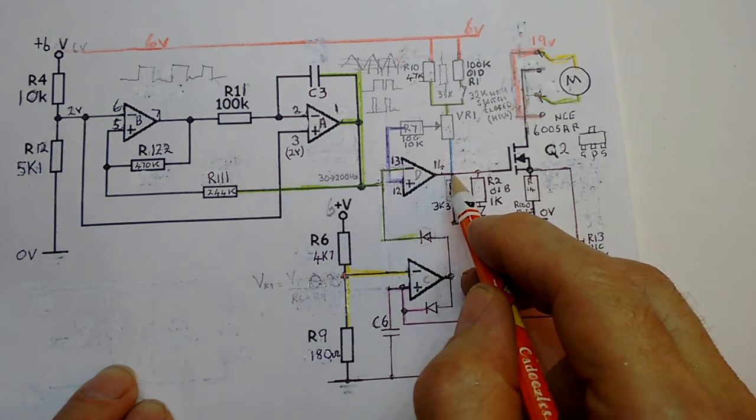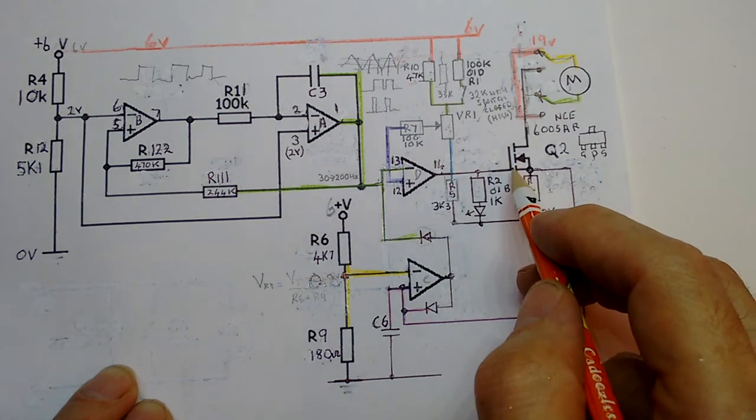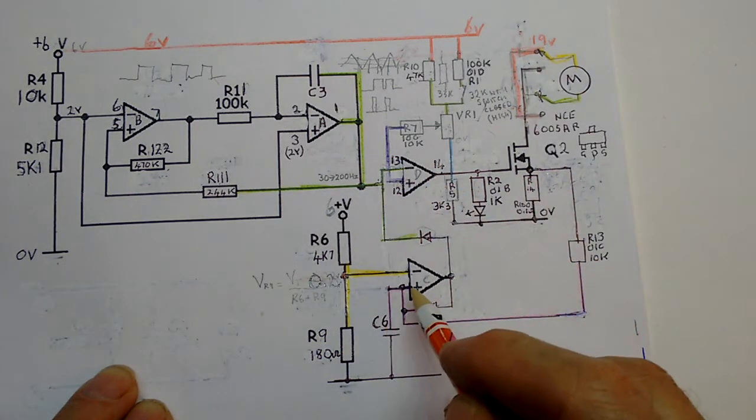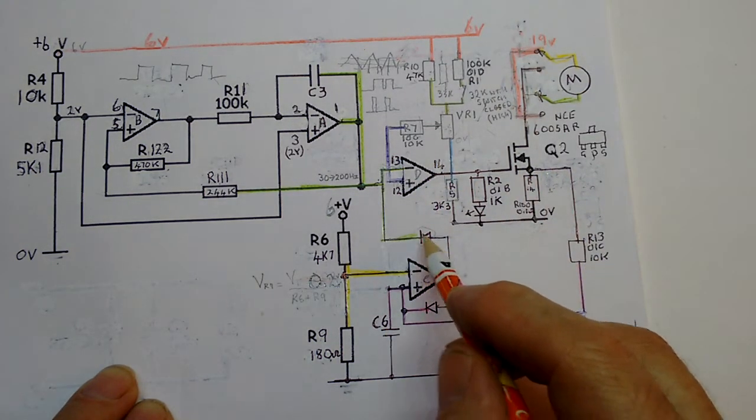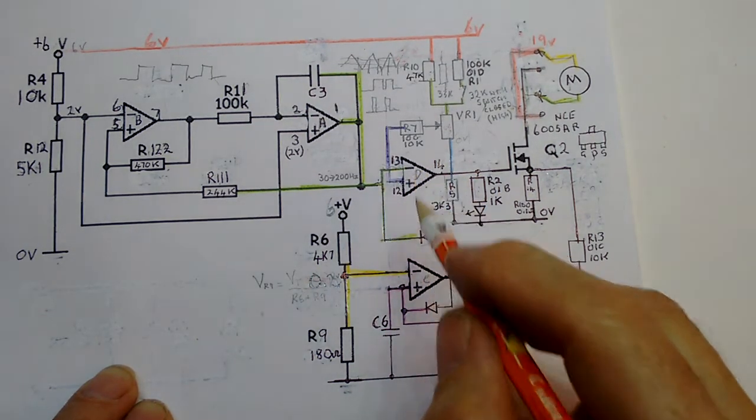And this will be high, because this is high. The output will be higher than this, the output will be low, and the transistor will stay off. So by putting too much current through, we've sent feedback into this op amp which has switched this op amp off.